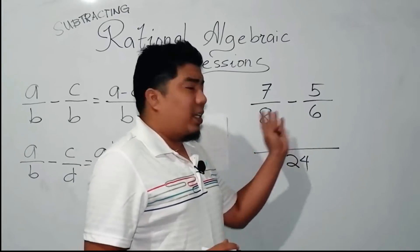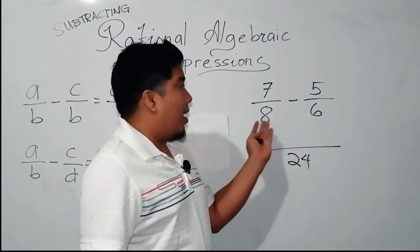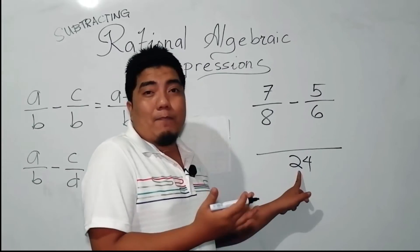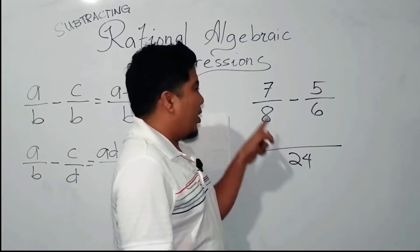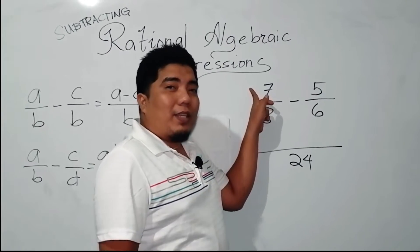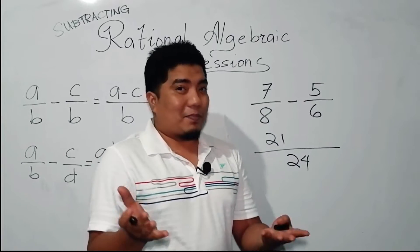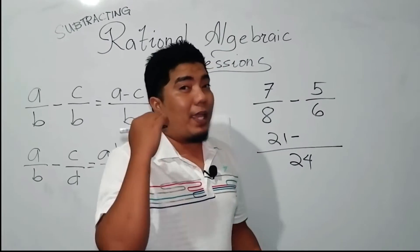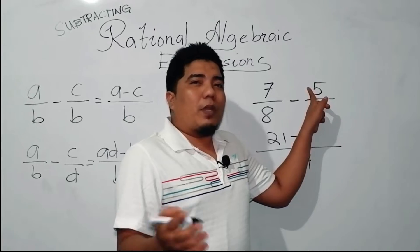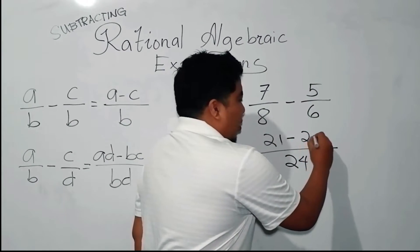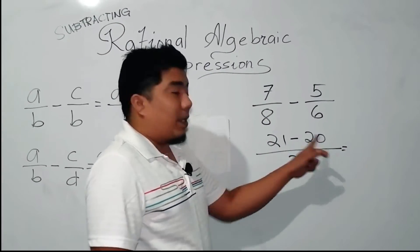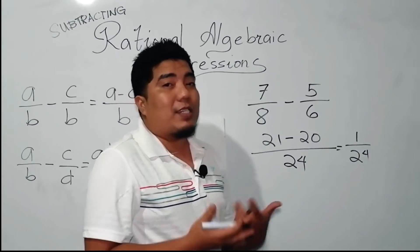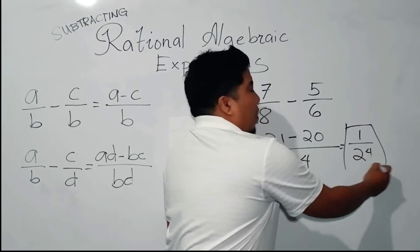Once you get the LCD, you get the equivalent numerators. Ask yourself, what happened to 8 that it became 24? It was multiplied by 3. So we also multiply our numerator by 3: 7 times 3 is 21. Next, what happened to 6 when it became 24? It was multiplied by 4. So we also use in the numerator 5 times 4, and the answer is 20. Now we can subtract immediately: 21 minus 20 is 1 over 24. This is already in its simplest form. Therefore, we have our final answer.